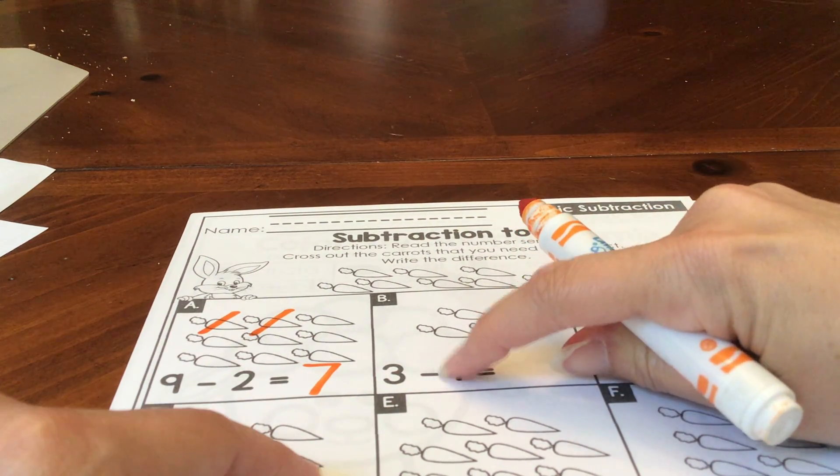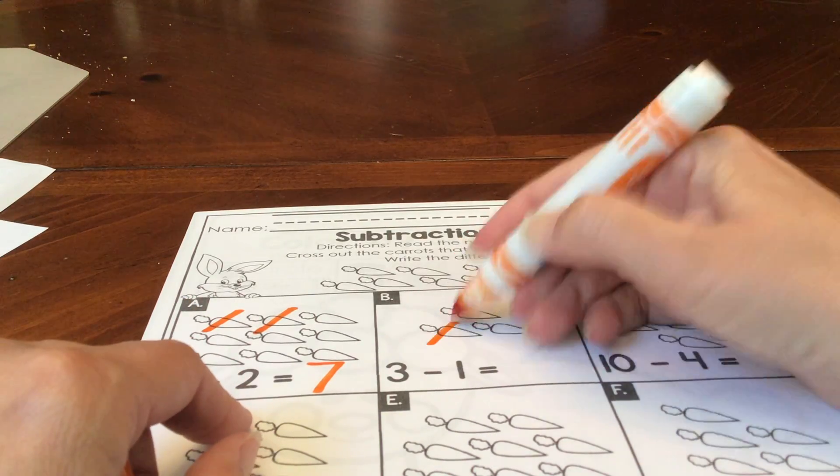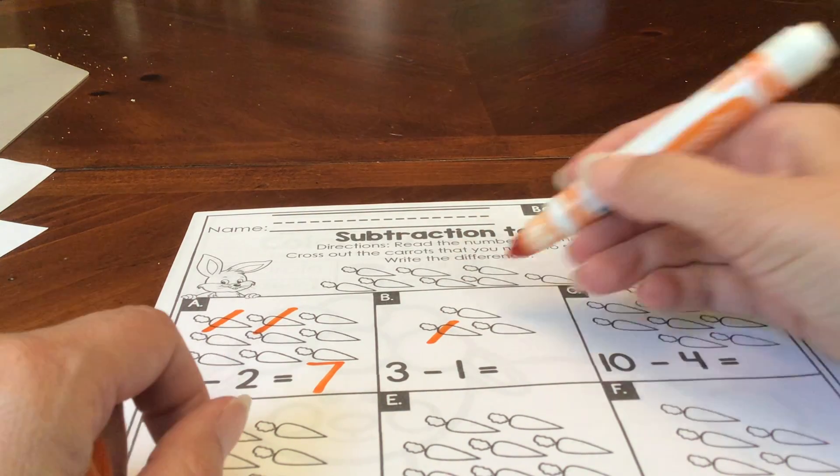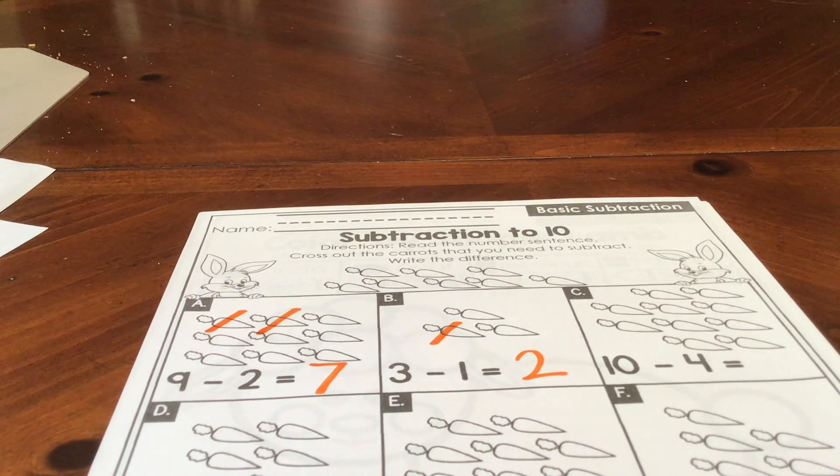Minus means that you're breaking that group apart or that some are going away. So the bunny's going to eat one and you've got to see how many carrots are left. One, two. Two carrots are left. And you keep going and do the rest of the problems on your page.